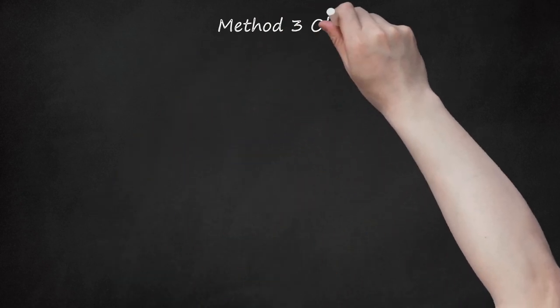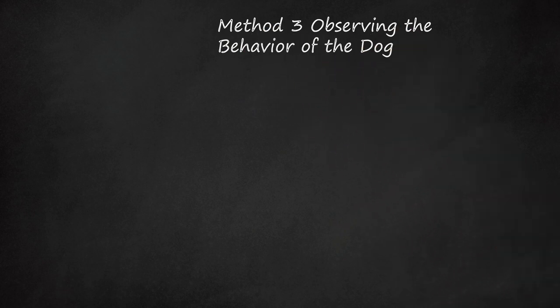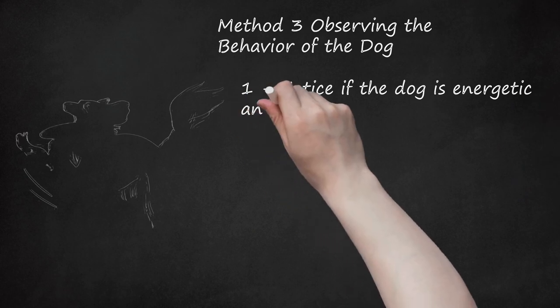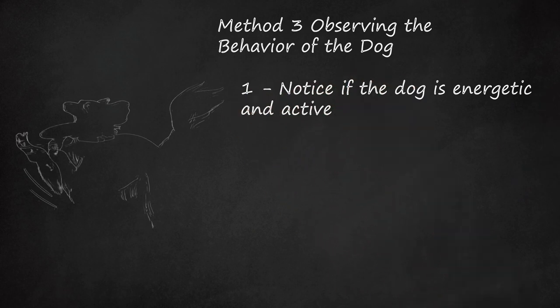Method 3: Observing the Behavior of the Dog. Notice if the dog is energetic and active. Collies are known for their intelligence and their energetic nature. They are an active breed and enjoy running in the woods, going for walks, or playing outside. In general, smooth collies can be more energetic, athletic, and agile than rough collies, who are often calmer and more reserved.